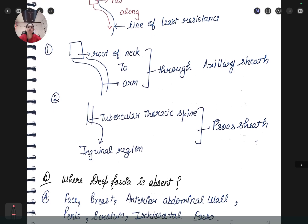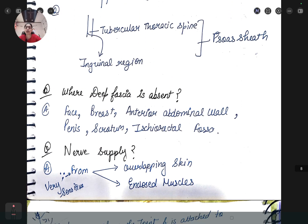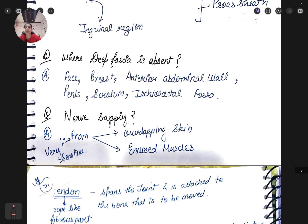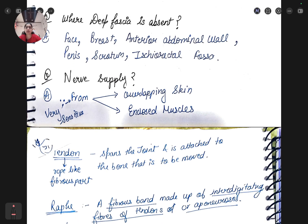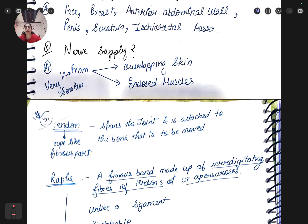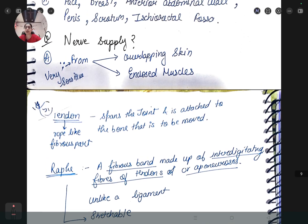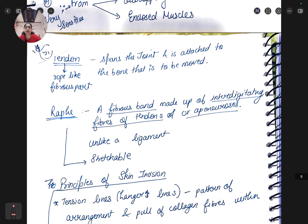How deep fascia forms potential pathways for infection to spread is an important question. They may give you a case and you have to solve it. Deep fascia has facial planes - if infection is here the pus will follow from here to here along the flow, along the map which has been paved by the deep fascia. Root of the neck to the arm through the axillary sheath. Where deep fascia is absent - in face, wrist, anterior abdominal wall, penis, scrotum.